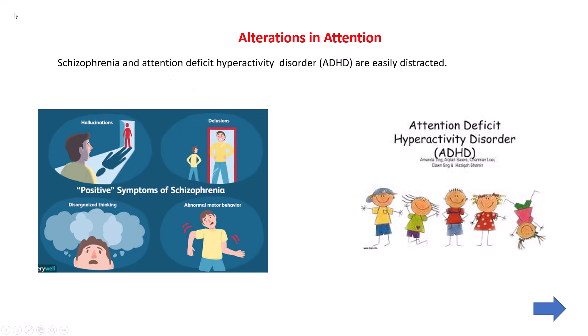This commonly affects schizophrenia patients and children with attention deficit hyperactivity disorder (ADHD). Schizophrenia patients already have problems of hallucinations, delusions, abnormal motor behavior, and disorganized thinking, so they are very prone to get distracted and cannot maintain their attention. ADHD children have the same problem — they cannot keep their attention on a particular object due to these abnormal mental problems.